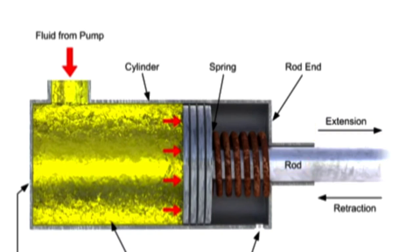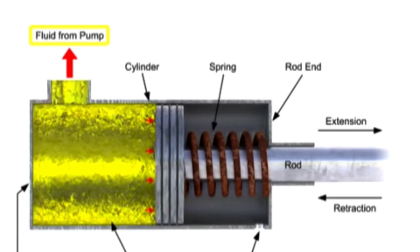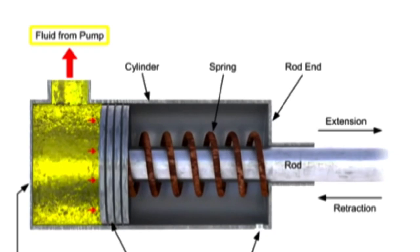When a control valve directs fluid out of the port, the fluid pressure is removed. The force of the spring pushes against the piston in the other direction, and the rod returns to the cylinder. This is called the retraction stroke.